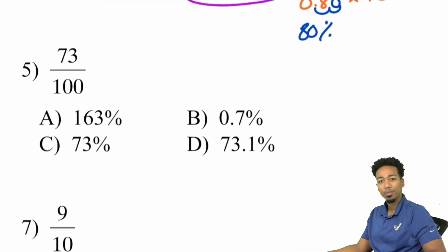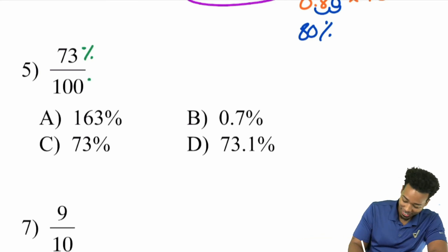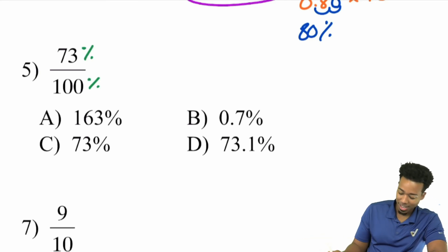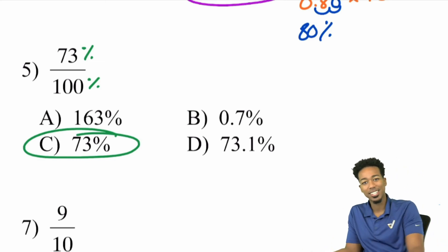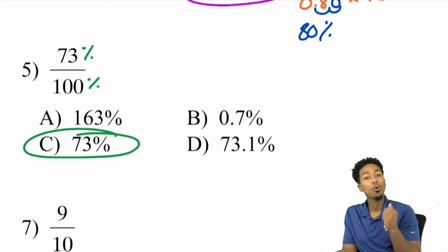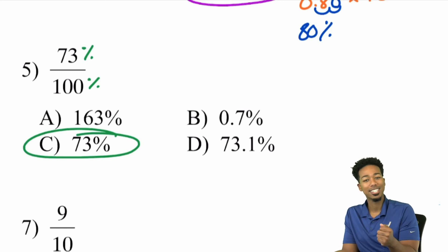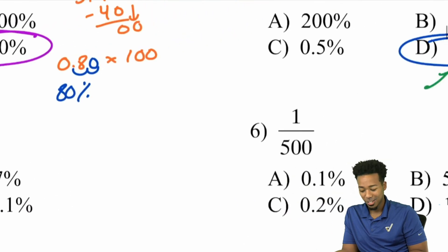Number five: 73 over 100. Do I have to do any work here? No — it's already out of 100. This is 73% out of 100%. The answer is C. Remember the core principle: percents are out of 100.